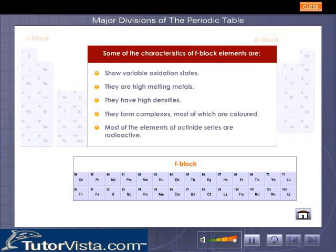Some of the characteristics of F-Block Elements are: Show variable oxidation states. They are high melting metals. They have high densities. They form complexes, most of which are colored. Most of the elements of actinide series are radioactive.